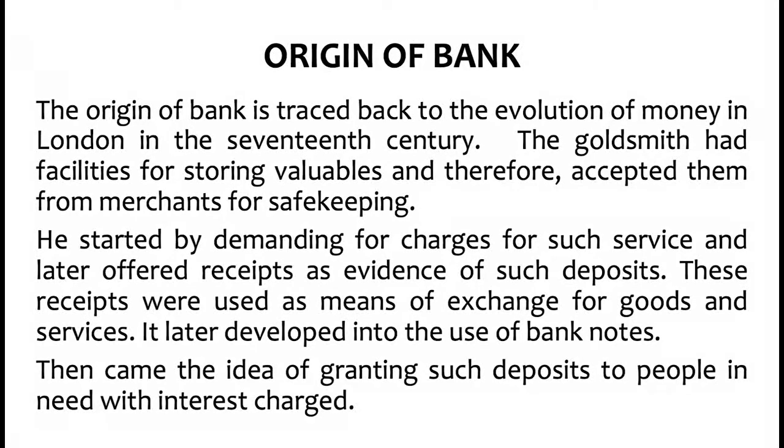Because in our definition, a bank is a place where money and other valuables are kept. So people were keeping their valuables there because of the trust they had in him — for safe custody. They trusted that whenever they went to collect, it was always there to give. The goldsmith accepted valuables from merchants for safekeeping and started by demanding charges for such services — asking those bringing valuables to pay for keeping them.